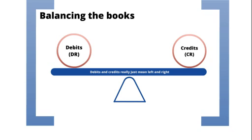Double Entry Accounting is a set of rules governing the way in which accounts are recorded. It operates on the basis that each transaction has two corresponding entries in the business's accounts — one debit or left column and one credit or right column. A series of ledger accounts record the company's transactions, and each credit and debit entry are made in the appropriate ledger account for each transaction.